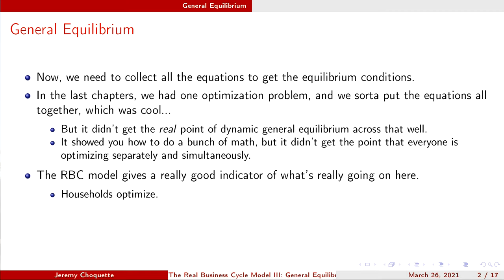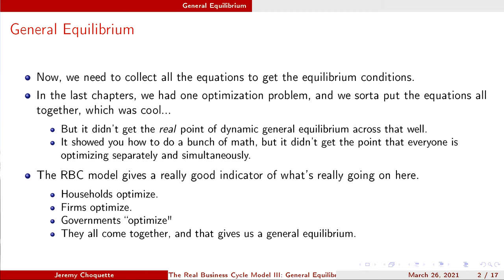Households optimize how much labor they want to provide to the firm, giving us the labor supply equation. When firms optimize, they figure out how much labor they need given how much they want to produce, which derives a labor demand system. When labor supply and labor demand are combined, that's an equilibrium — a real wage rate. We can think of this as a two-stage process: first everyone optimizes, then the equilibrium is determined via that optimization.